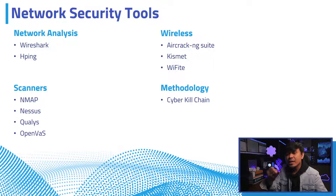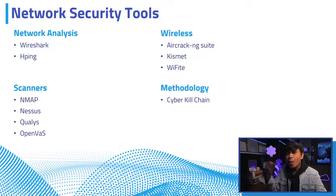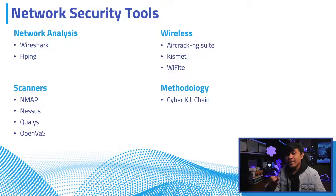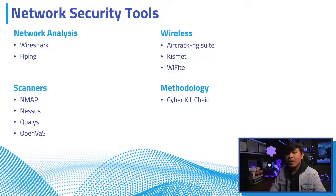For wireless, there are many tools used for packet capture, IDS, and cracking authentication, such as Aircrack-ng suite, Kismet, and others — all available in Kali Linux. For network scanners, Nmap is the most commonly used command-line vulnerability scanner. It's free, open source, supports multiple scan modes to bypass firewalls, and supports fingerprinting. You can also use commercial scanners such as Nessus and Qualys, which provide a GUI, automated scans, report generation, and plugin support.